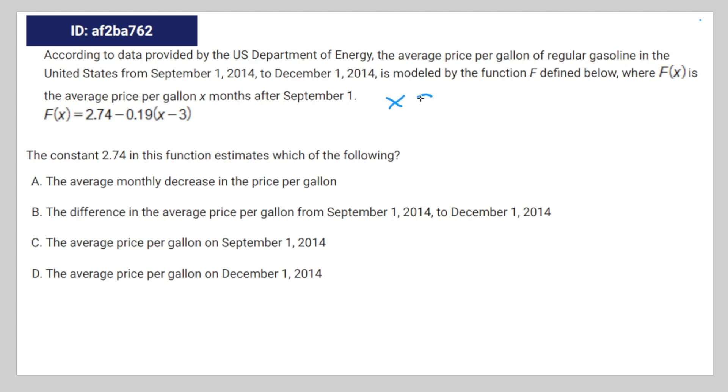So say x was equal to 3. And that would be the average price per gallon in December 1st.